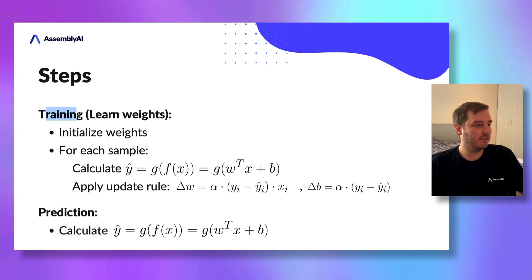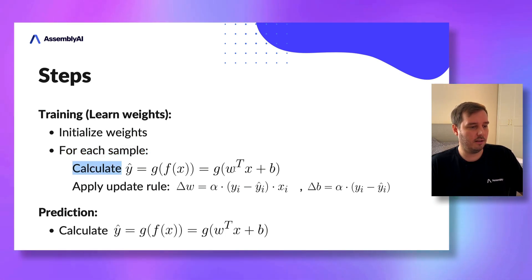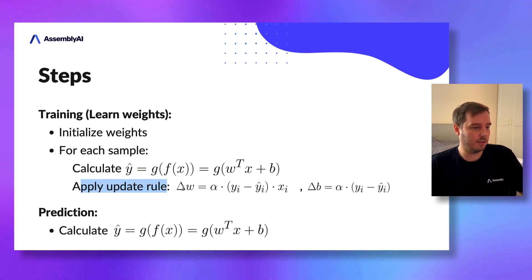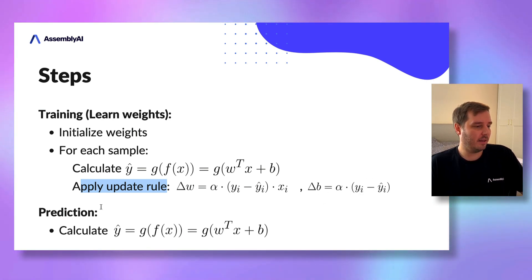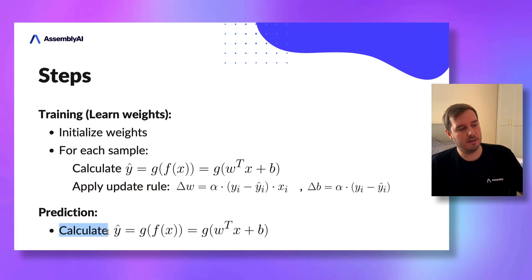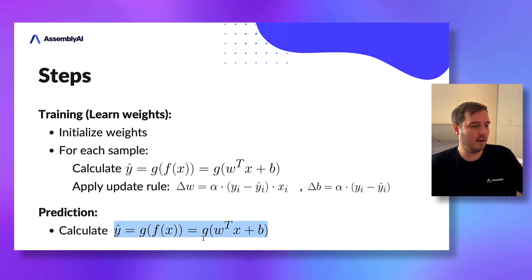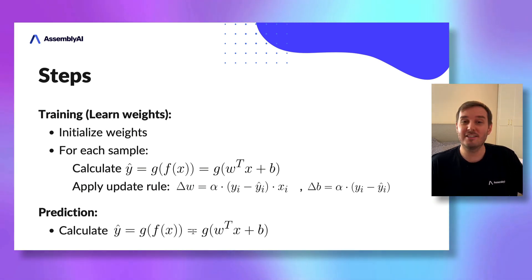Let's summarize the steps. In the training part, we initialize the weights, and then for each sample we calculate the approximation with the linear model and the unit step activation function. Then we apply the update rule: delta_w equals alpha times (y minus y_hat) times x, and delta_bias equals alpha times (y minus y_hat). In the prediction part with test data, we simply calculate y_hat using the linear model with the activation function, which returns 1 or 0.